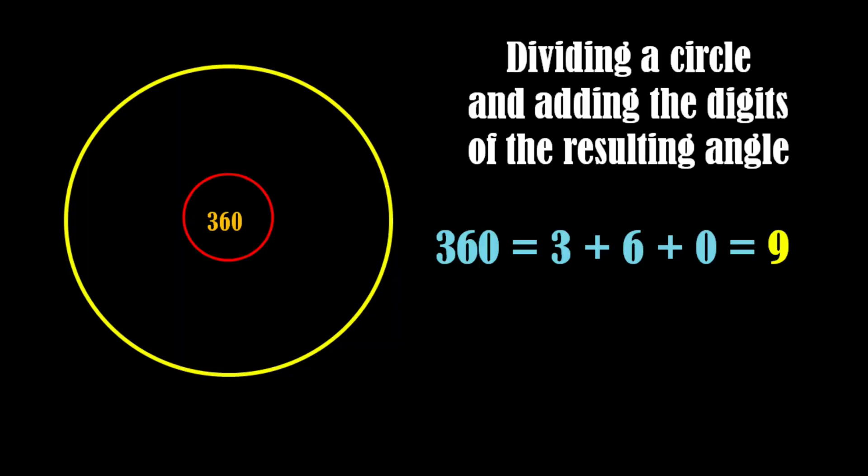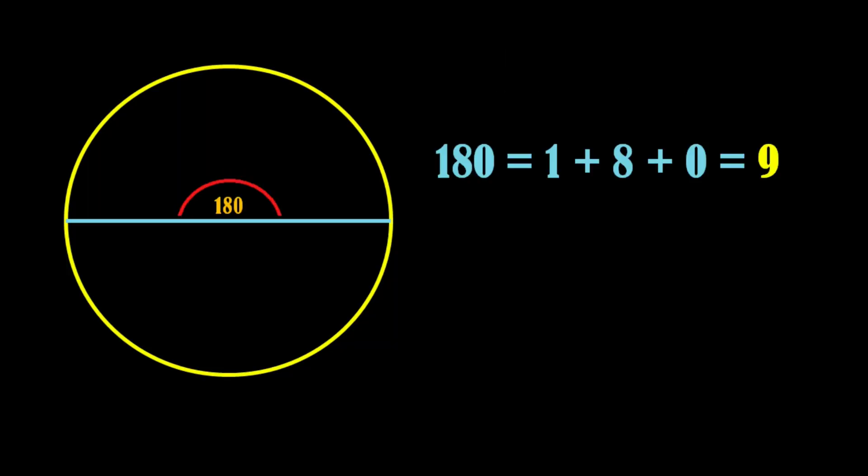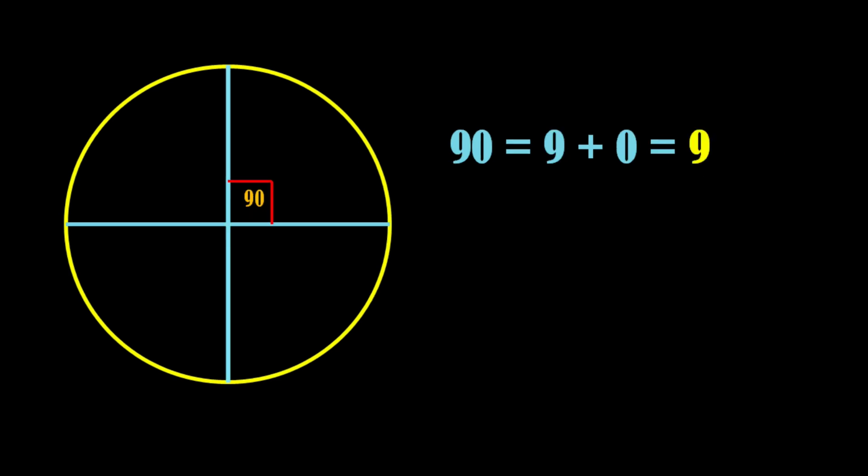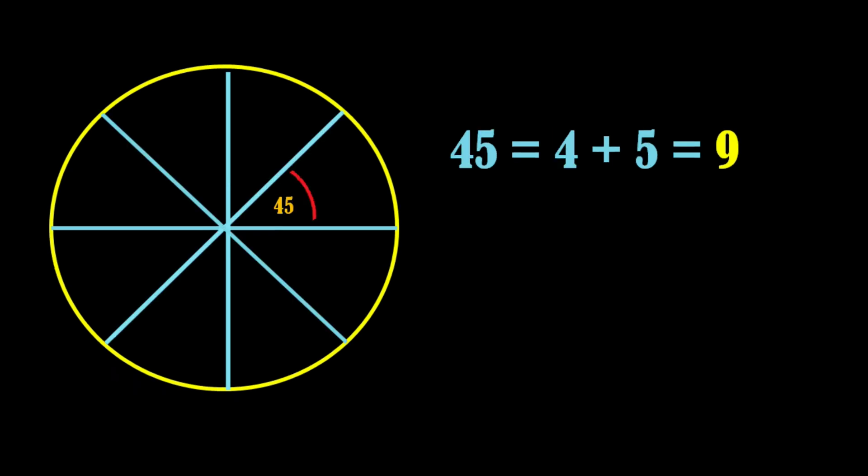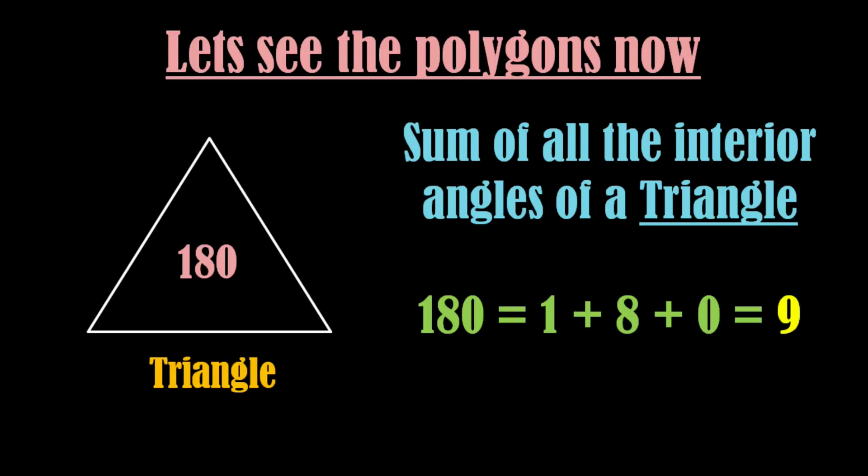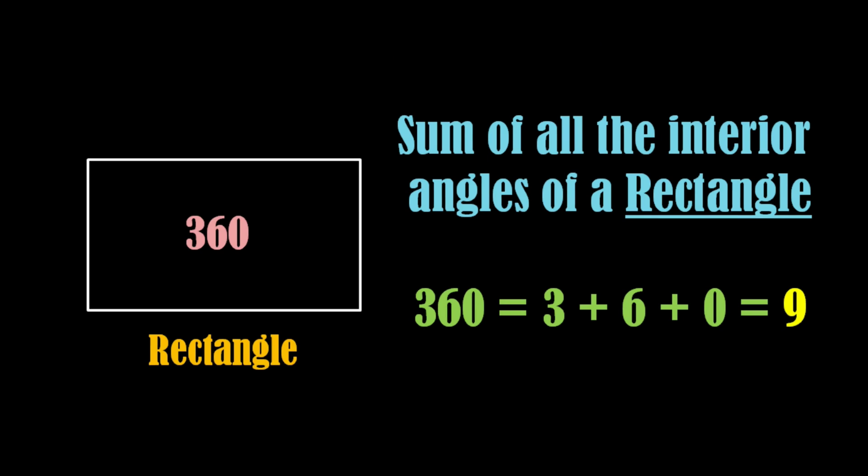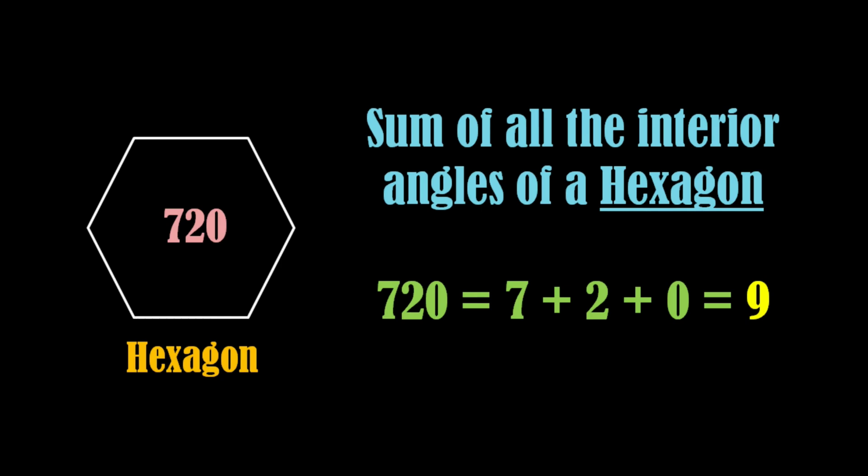When you were dividing the circle in half repeatedly, we were reaching the singularity of space. Every time we encountered the number nine, it indicates that nine follows space up to its singularity. Moreover, as the number of sides of the polygon increased, the polygon itself started to look like a circle.